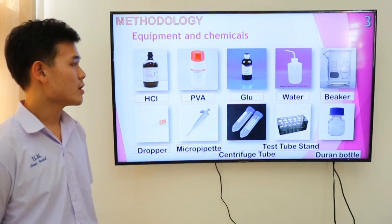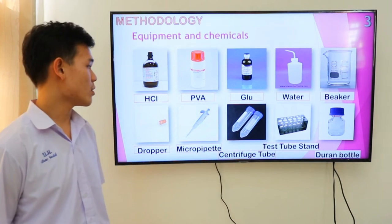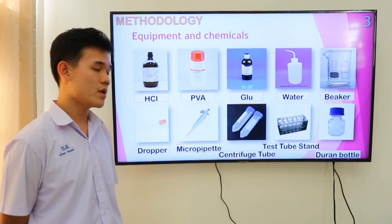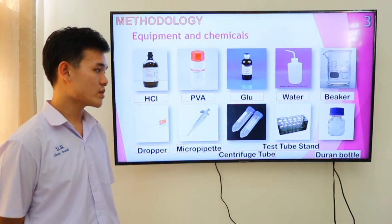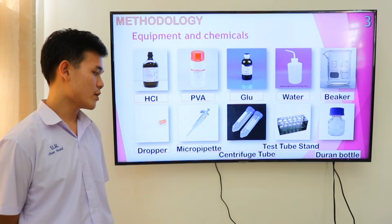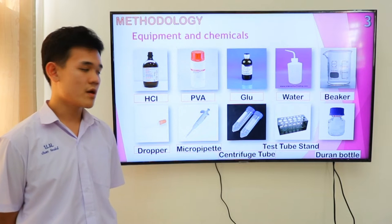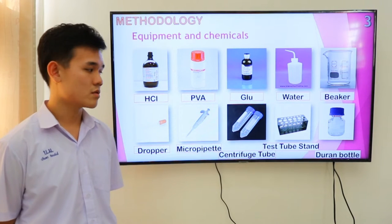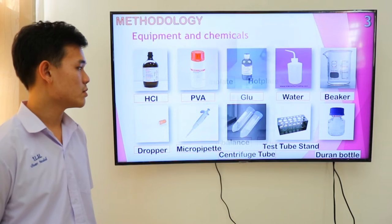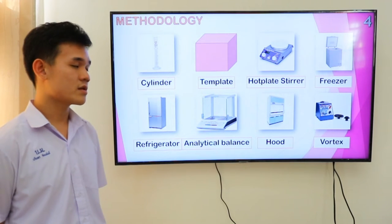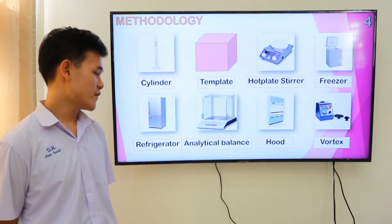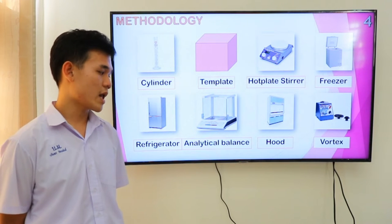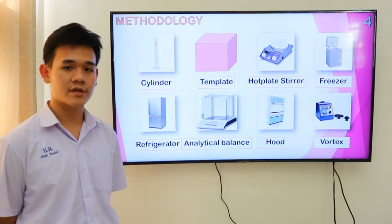Methodology — equipment and chemicals: hydrochloric acid, polyvinyl alcohol, glutaraldehyde, water, beaker, dropper, micro-pipette, centrifuge tube, test tube stand, drain water, cylinder, template, hot plate, stereo, freezer, refrigerator, analytical balance, wood, and vortex.